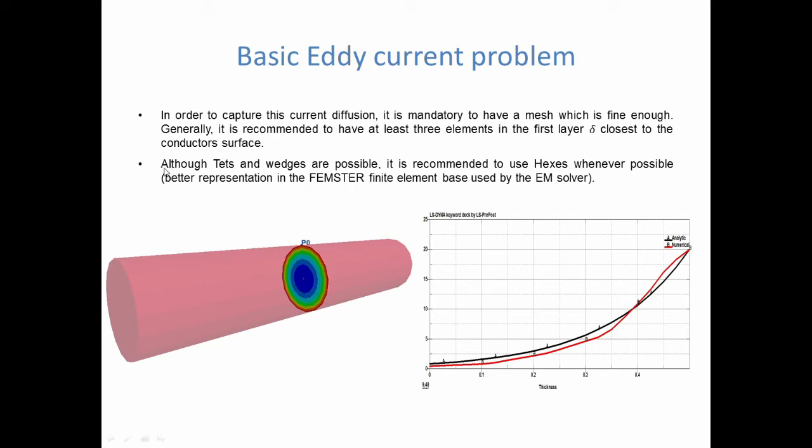One side point which I'd like to mention since we're talking about the mesh. Tets and wedges are possible with the electromagnetic solver. However, it is strongly recommended to use hexes whenever possible. The reason is related to the finite element base which the EM solver is using, it's called FEMSTER. One of its properties is that you have a very good conservation of the solution within one element, provided it's a hex element.